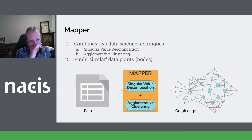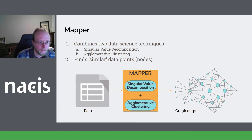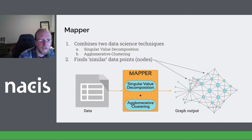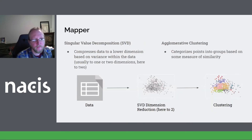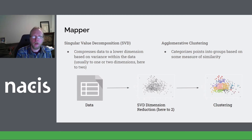Mapper is kind of cool because it combines two data science techniques: the first being singular value decomposition (SVD) and the other being agglomerative clustering. It does that to try to find similar data points in high dimensional data and outputs them in a graph of interconnected nodes and edges. The way Mapper works is it first uses SVD to find vectors through your data set which account for the greatest amount of variance in the entire set's dimensionality.